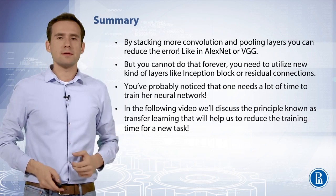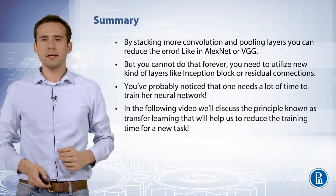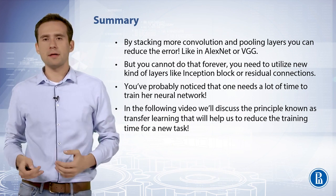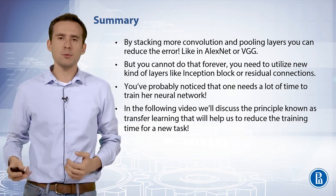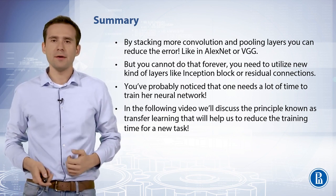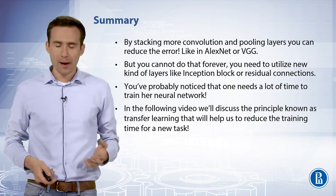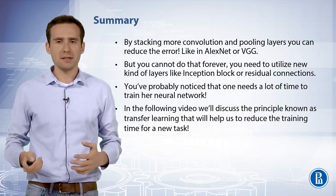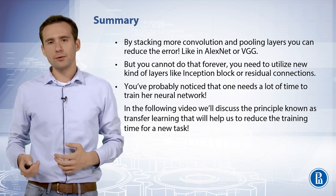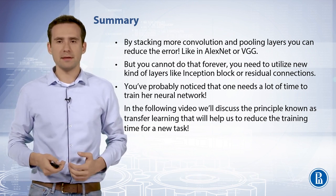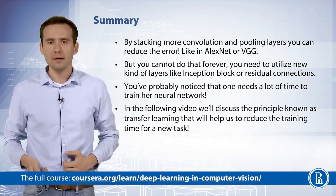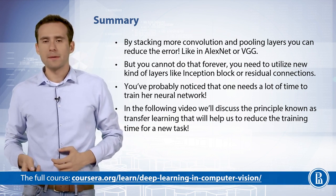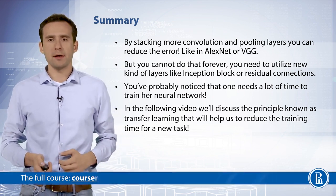To summarize: stacking more convolution and pooling layers and deepening the network reduces error on standard benchmarks and practical applications, as seen with AlexNet and VGG. However, one should employ more sophisticated convolutional blocks such as the inception block to improve performance on more complicated datasets. In the next video, we will discuss the principle known as residual learning that allows building even deeper convolutional architectures for vision.